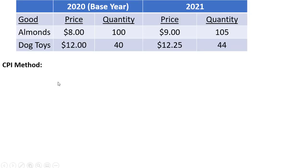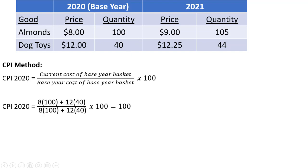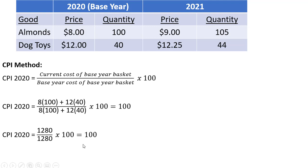Turning our attention to the CPI method — the consumer price index in 2020 is the current cost of the base year basket divided by the base year cost of the base year basket. Our base year basket is 100 almonds and 40 dog toys. The current cost is 8 times 100 plus 12 times 40, and the base year cost is the same: 8 times 100 plus 12 times 40, giving us a CPI in 2020 of 100.